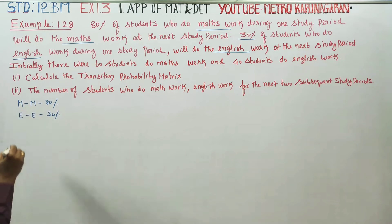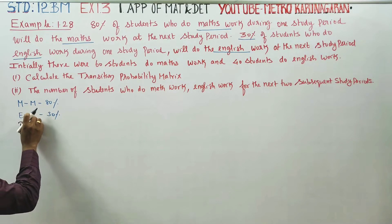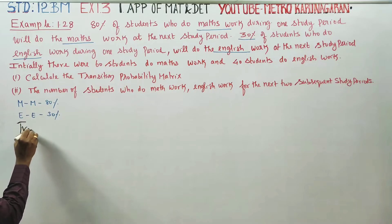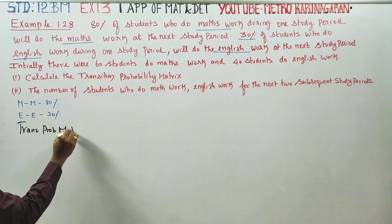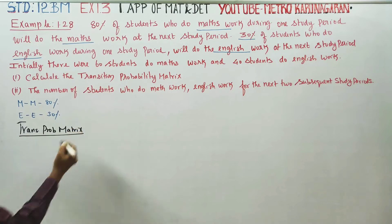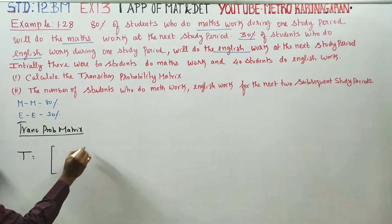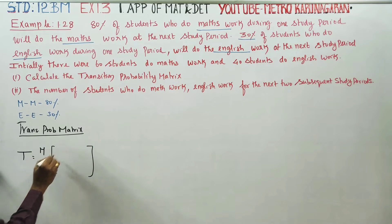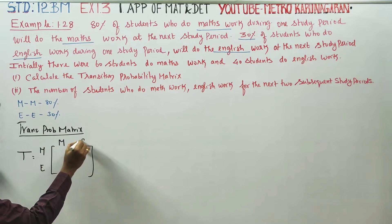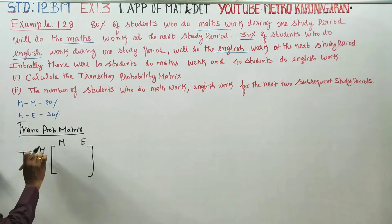English followed by English is 30%. The Transition Probability Matrix is going to be set up. We call the Transition Probability Matrix T.